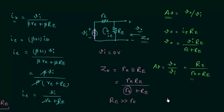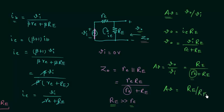Since RE is much greater than r_e, we can neglect r_e from the denominator. So the voltage gain AV equals RE divided by RE, which is nearly equal to 1. This confirms what was stated in the last lecture: the voltage gain is nearly equal to 1 in the emitter follower configuration, and this is one of its important properties.